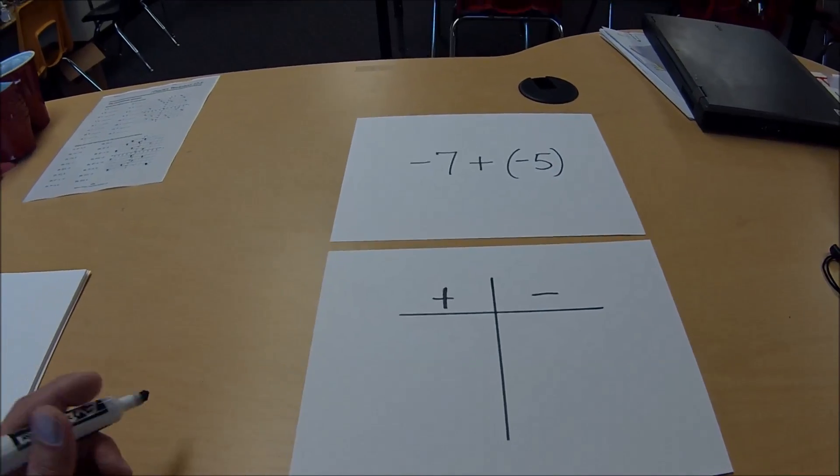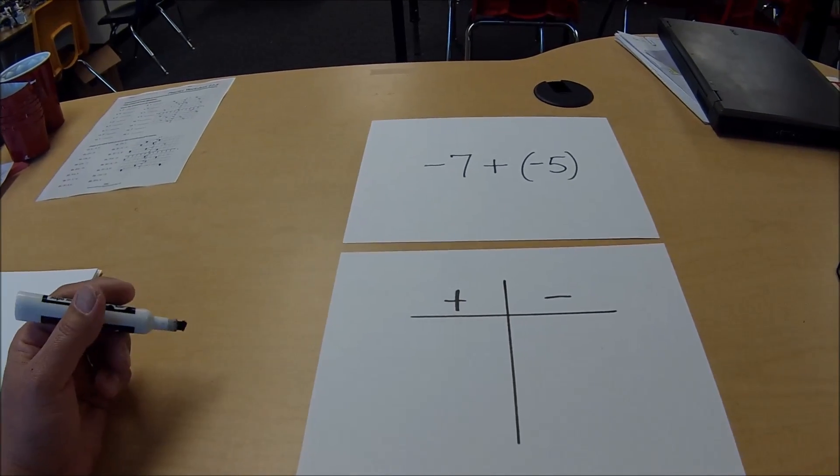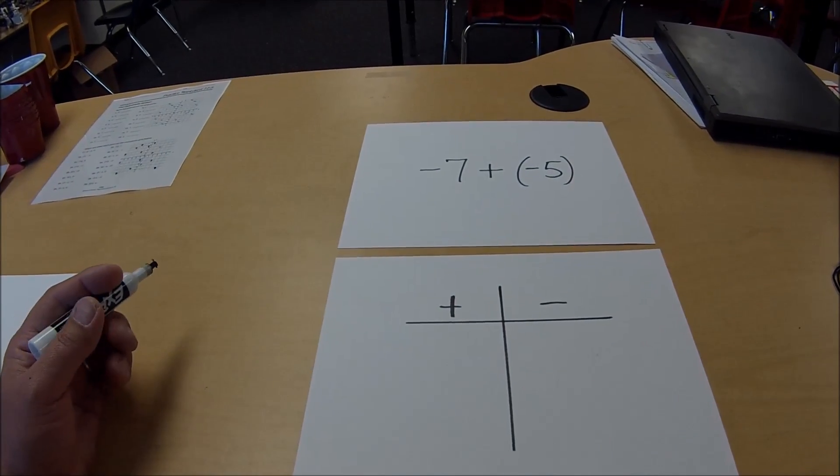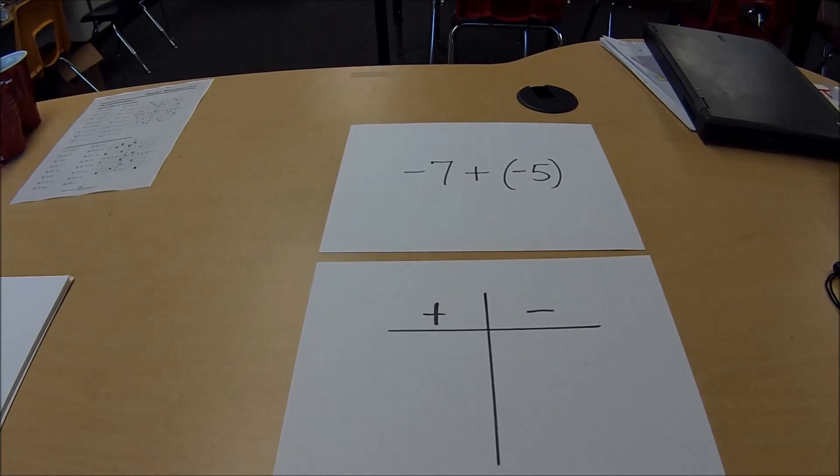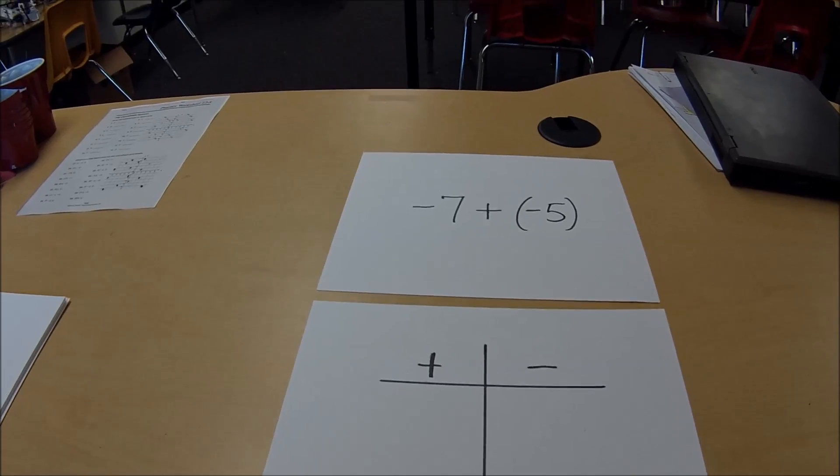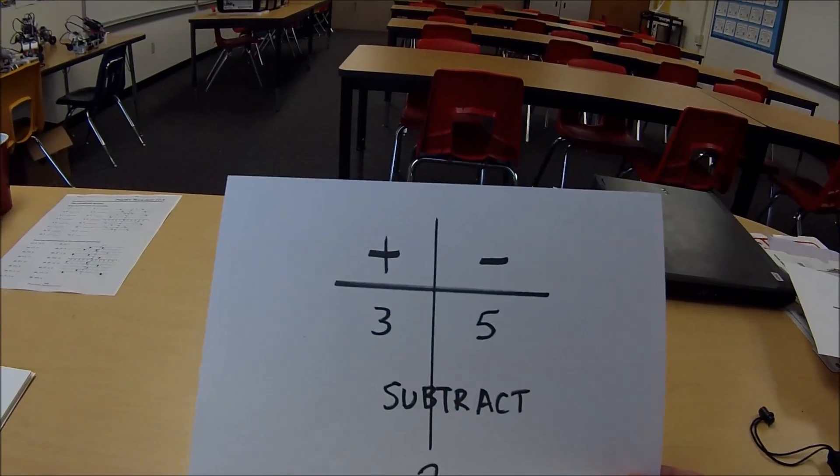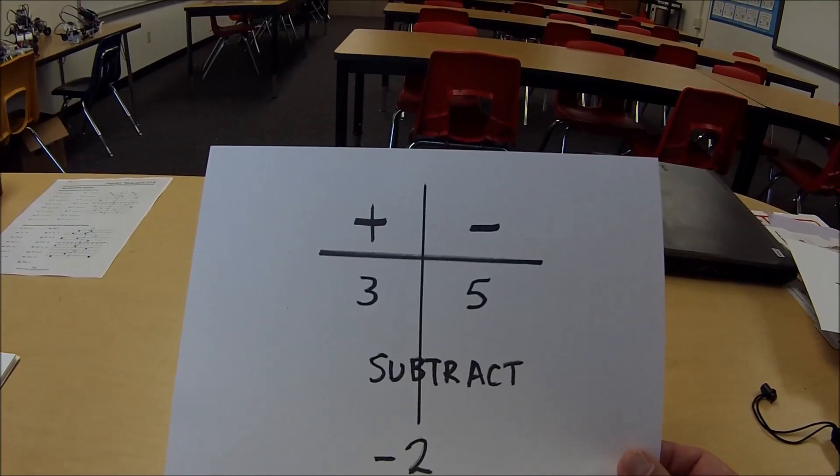So we got our same t-chart, positive side, negative side. So before we knew that if they were different signs, we'd put them on different teams and we would subtract. So let me bring that paper back here. So again, different teams we would subtract.